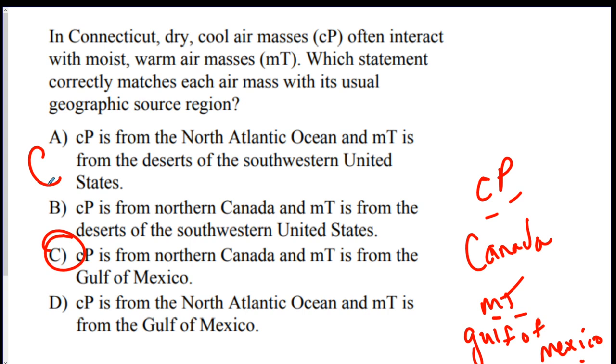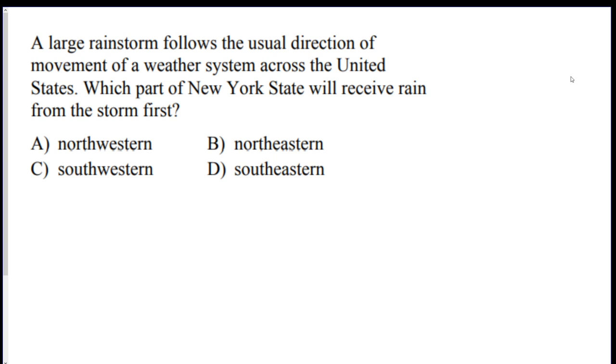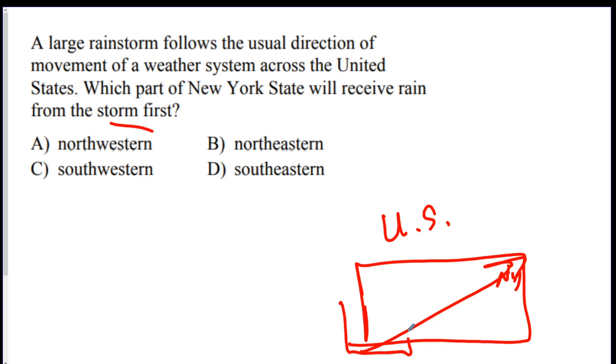A large rainstorm follows the usual direction and movement of a weather system across the U.S. Which part of the New York state will receive rain from the storm first? So if we draw a funny picture of the United States like a box, New York would be up here, right? All weather goes this way, we said. So the people that were going to get the storm first are going to be down here in the southwest. They're going to get it first and then it's going to travel towards the northeast. So C.